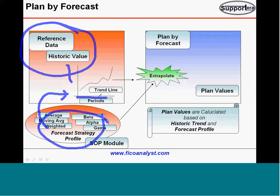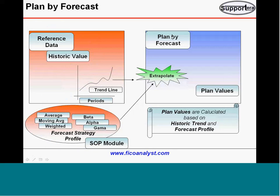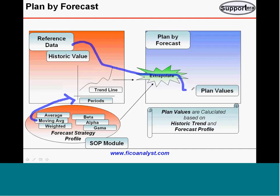For example, there are periods and a trend line. Based on this trend line, when you use 'plan by forecast,' you specify both the forecast strategy and the reference data. The system uses the forecast strategy — like moving average — looks at historical values, and extrapolates to come up with planning values. So, plan values are calculated based on historical trend and forecast profile — that is what 'plan by forecast' means.